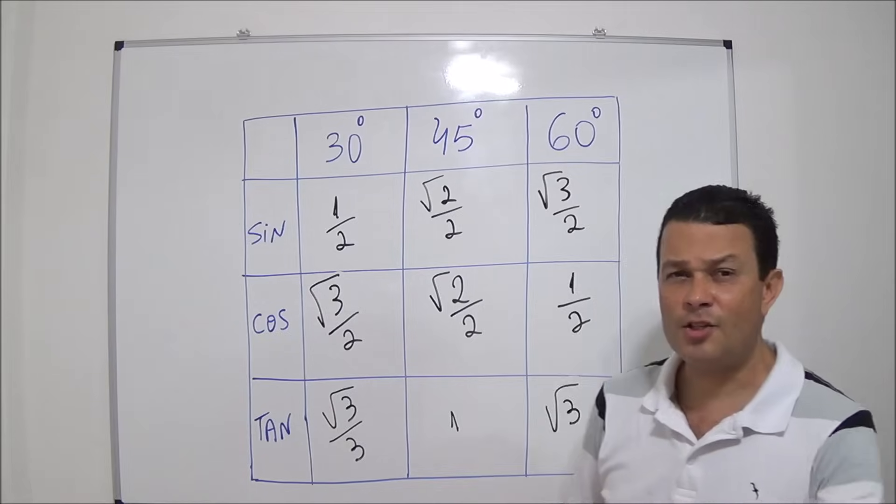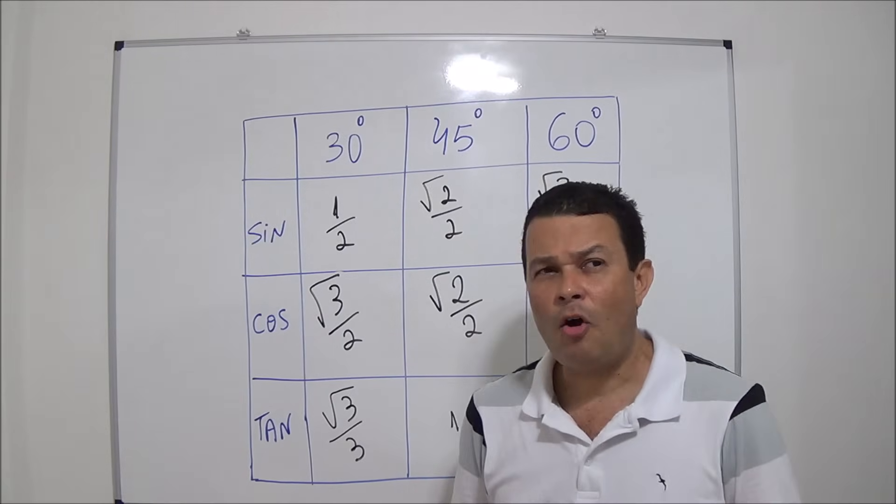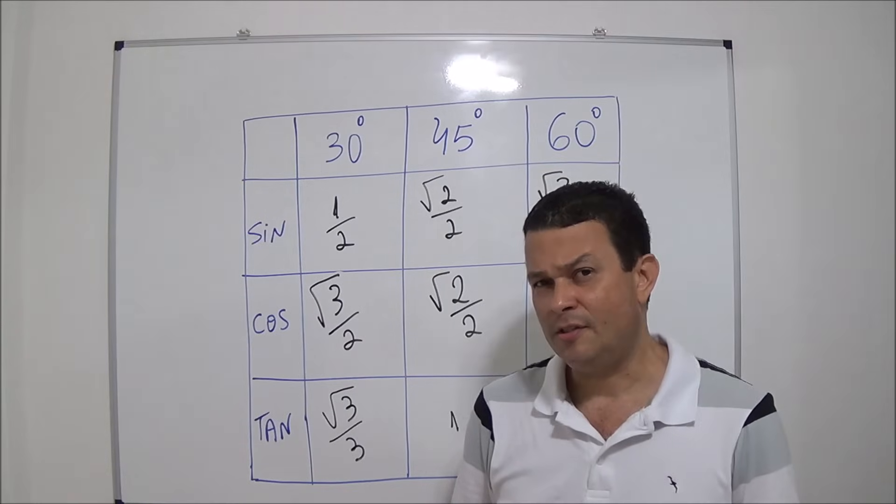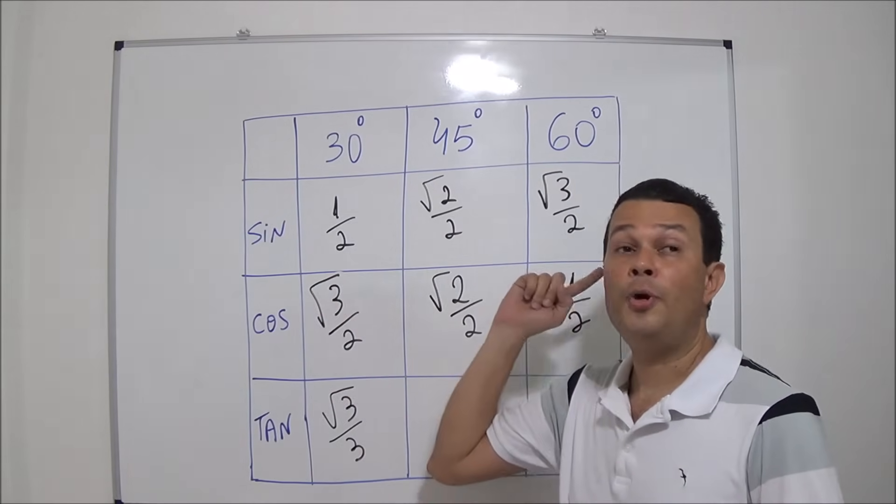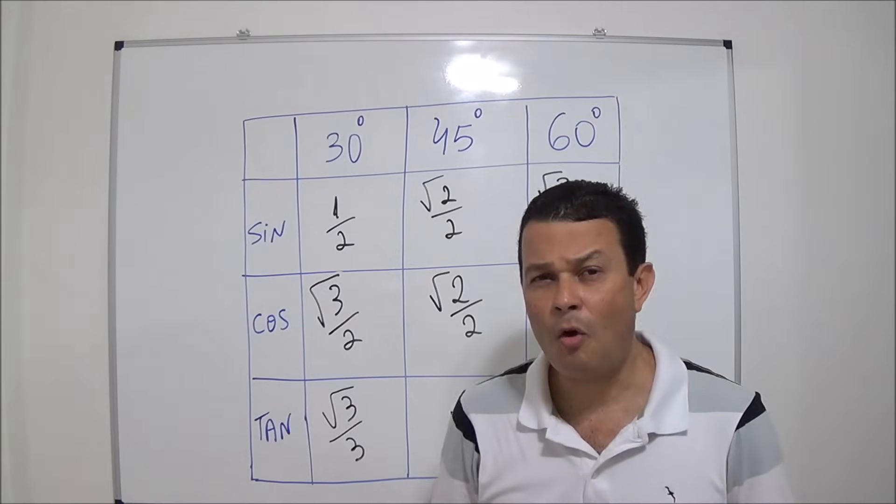Alright. If I ask you, what's sine of 60 degrees? One, two, three. Square root of three over two.